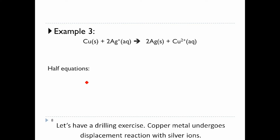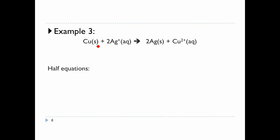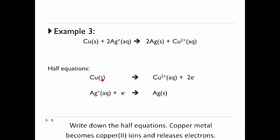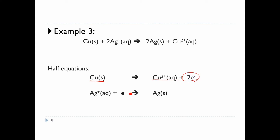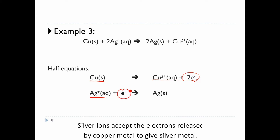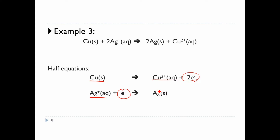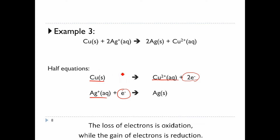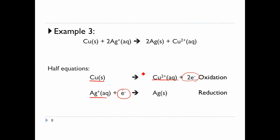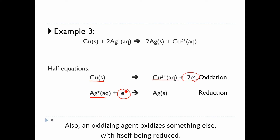Let's have a drilling exercise. Copper metal undergoes a displacement reaction with silver ions. Write down the half equations. Copper metal becomes copper two ions and releases electrons. Silver ions accept the electrons released by copper metal to give silver metal. The loss of electrons is oxidation, while the gain of electrons is reduction. An oxidizing agent oxidizes something else with itself being reduced.